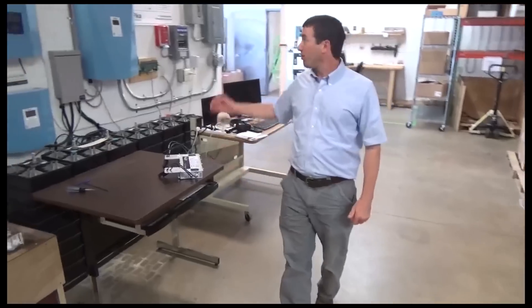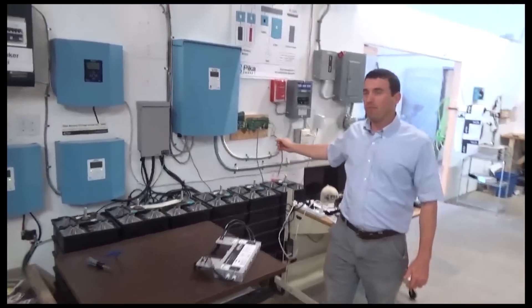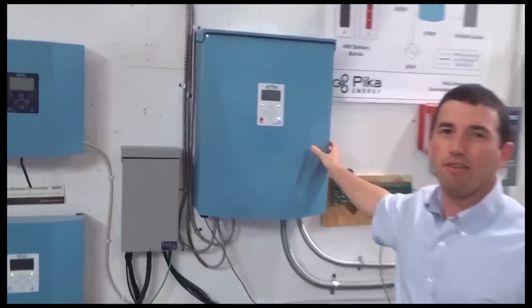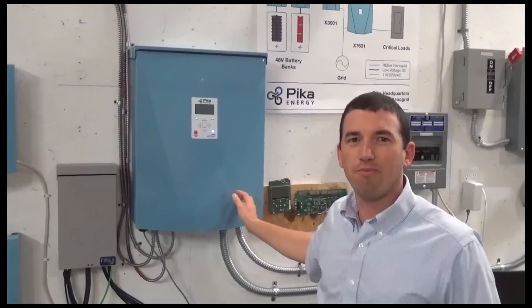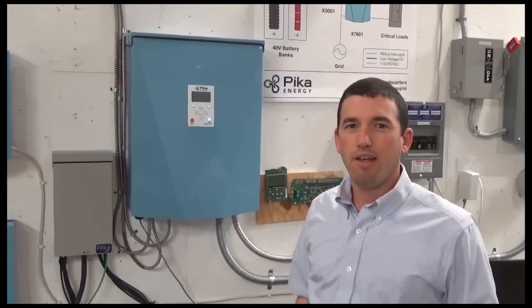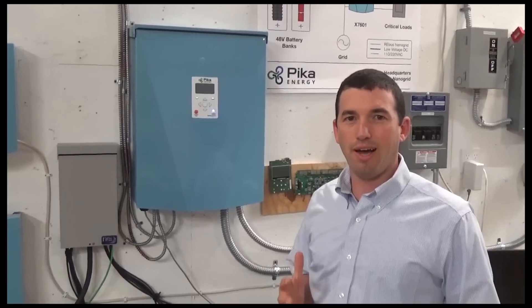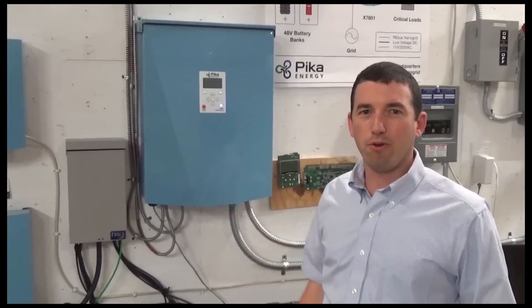We want one inverter to do the whole job. So what you're seeing here, show us the inverter. So this is our new model, this is the model x7601, which is a 7.6 kilowatt grid-tie inverter, but it also islands.